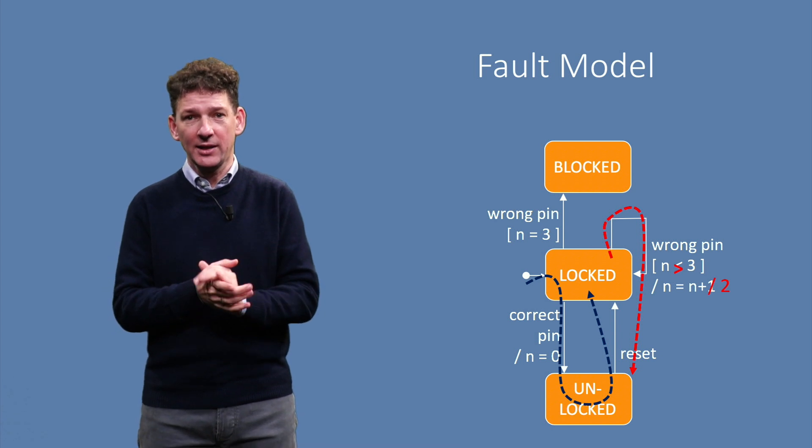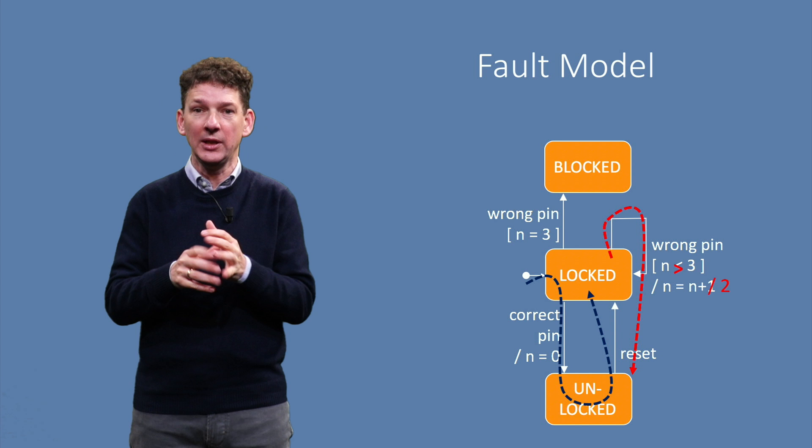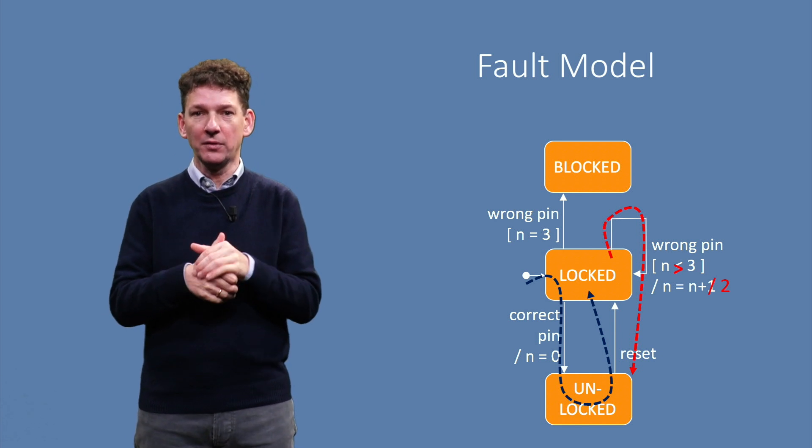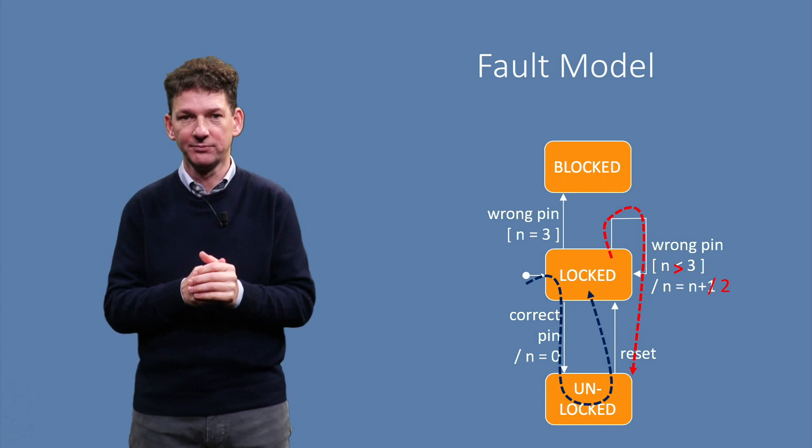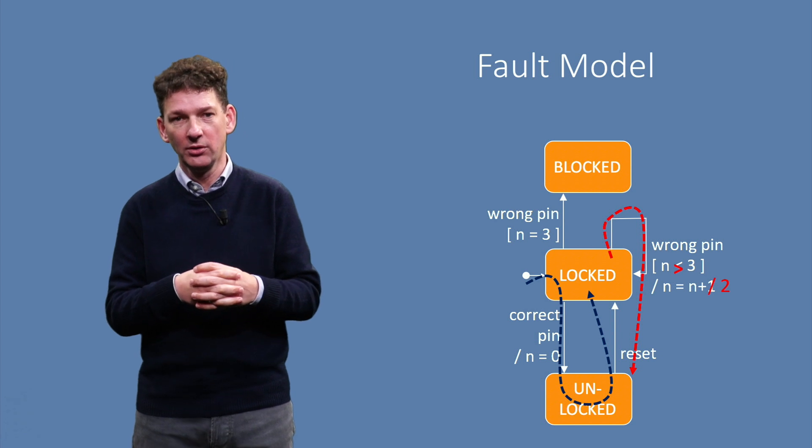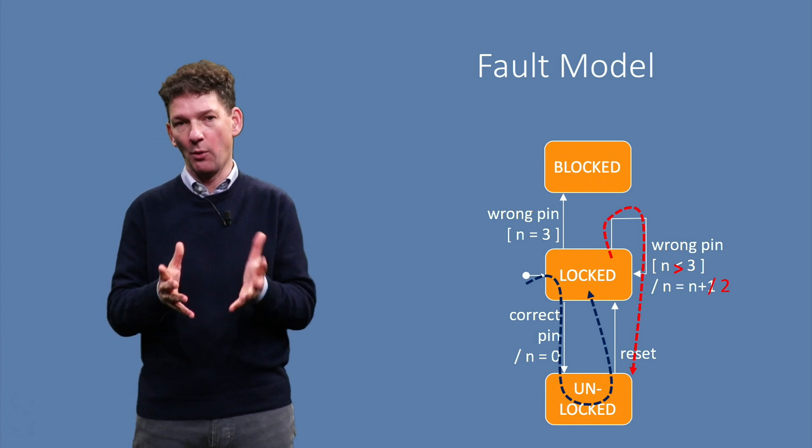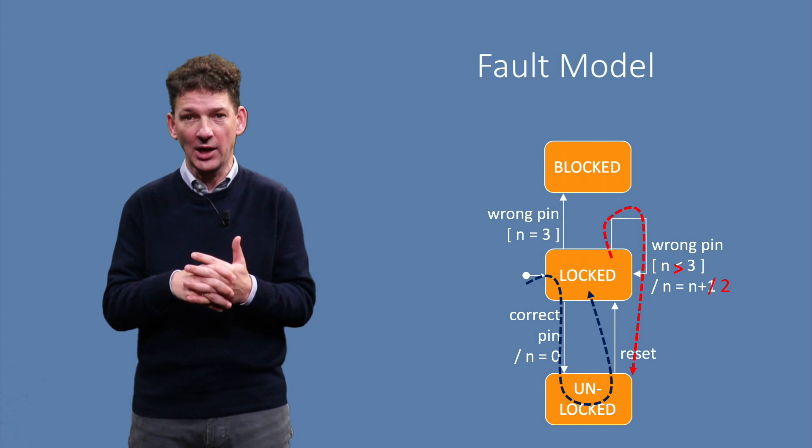Before we begin, let's consider what might go wrong if our system should faithfully implement a state machine. Here is our phone example again, with some faults drawn on top of it. The red arrow goes from locked to unlocked with a wrong pin event. Obviously, we don't want this to happen, and our test should check this.